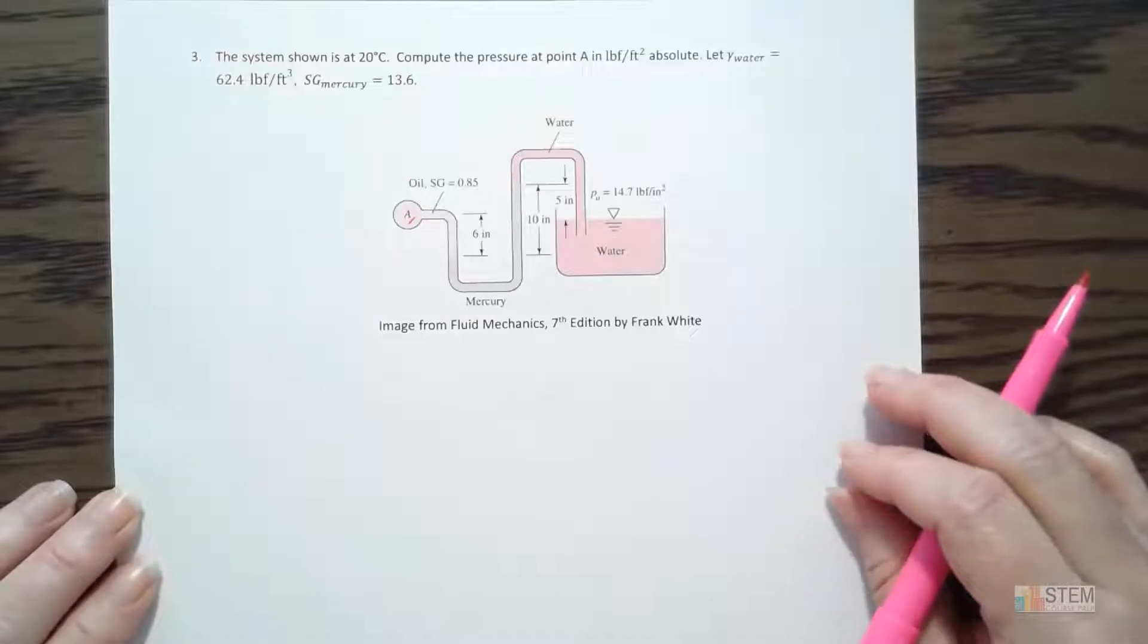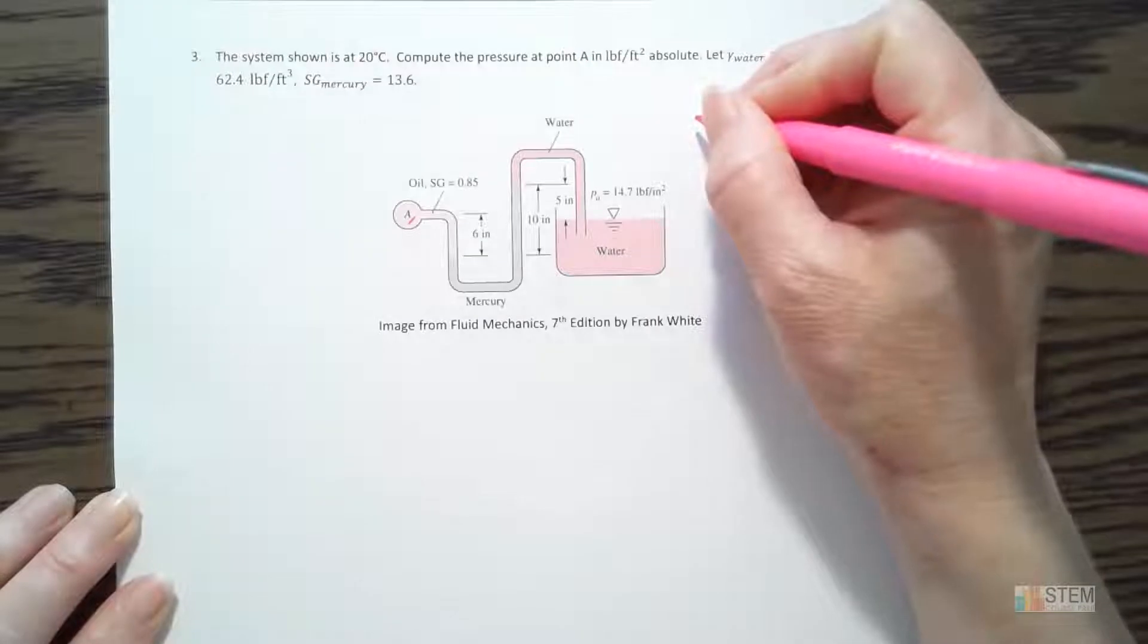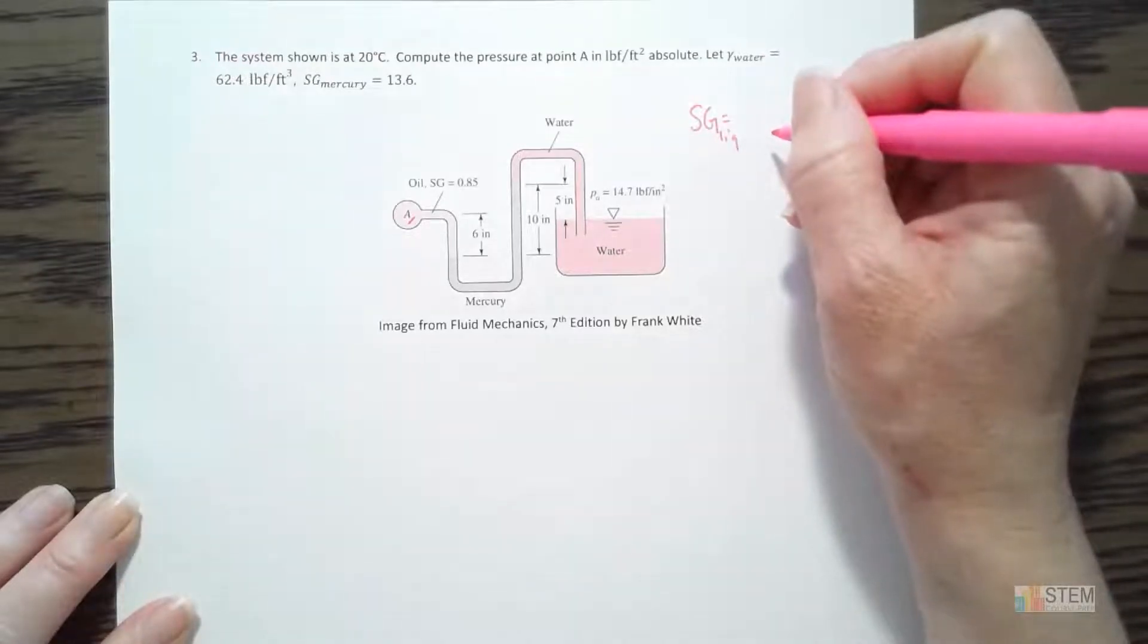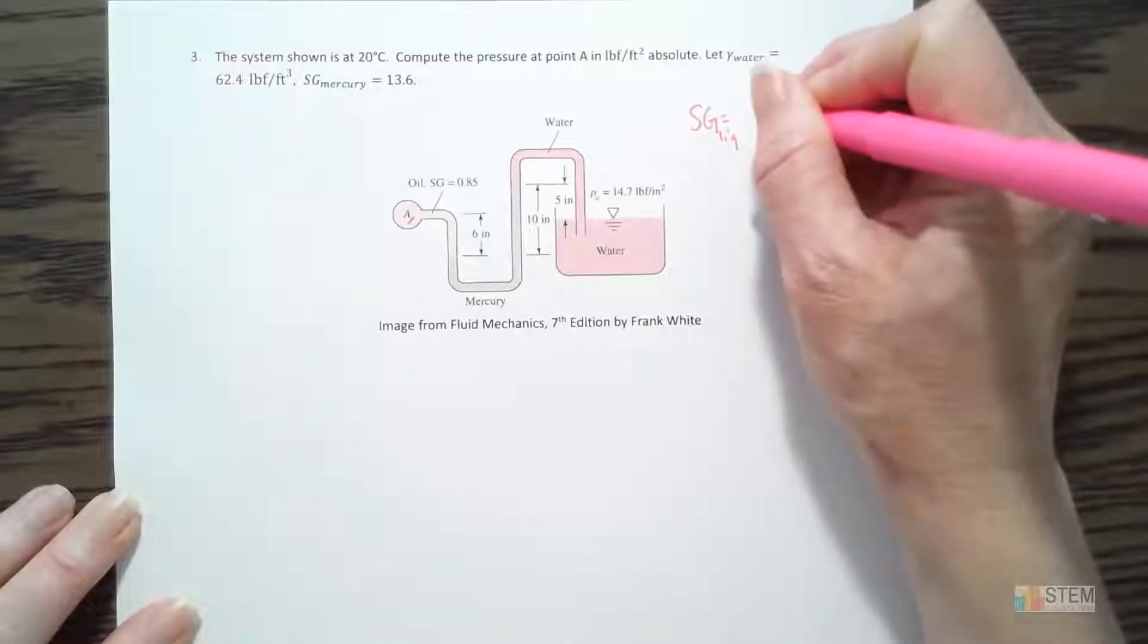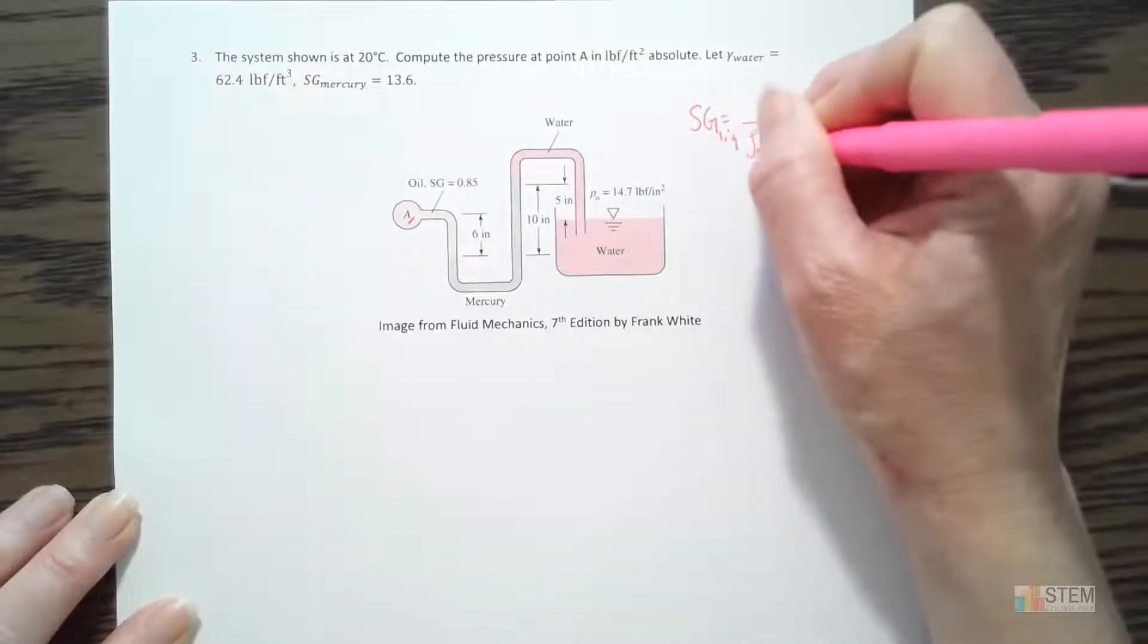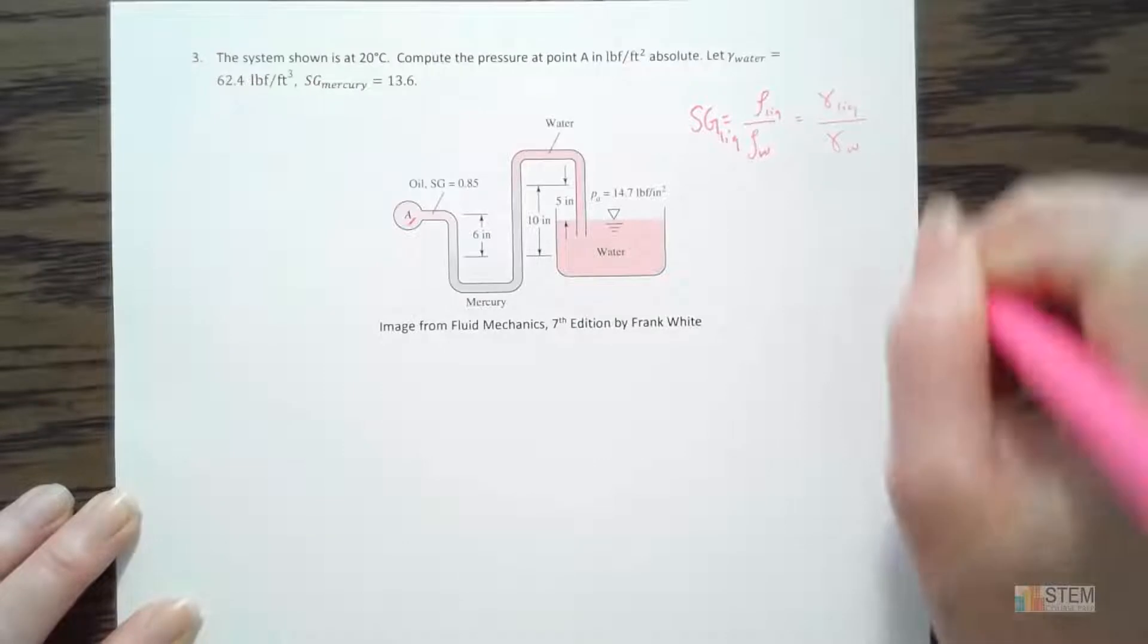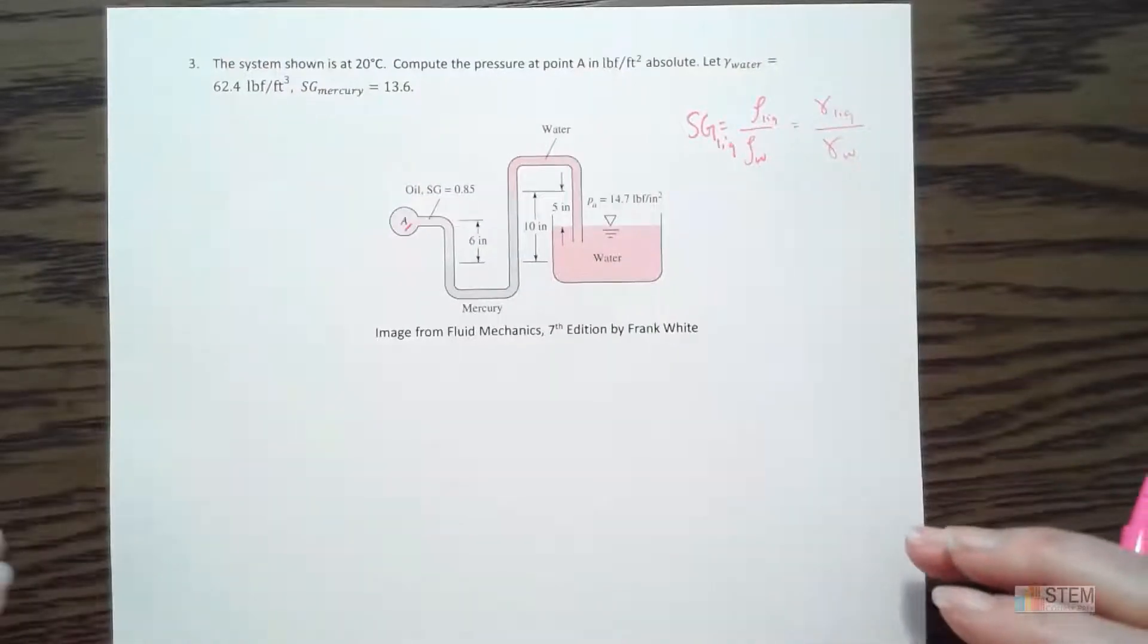Alright. So now we've got that. Before we go any further though, I just want to make note of the specific gravity. So remember specific gravity of a liquid, it's basically a dimensionless ratio, and we can use density or specific weight for that. So if you use density, it's going to be the density of your liquid over density of water, or we could have gamma of the liquid over gamma of water. So I just want to point that out, because we're going to need that in just a second.